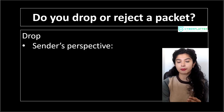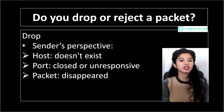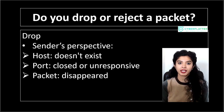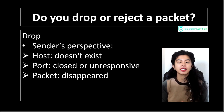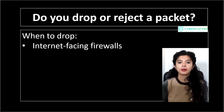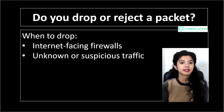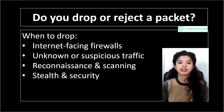From the sender's point of view, when a packet is dropped, it looks like the host might not exist, the port might be closed, or the packet just vanished somewhere on the internet. This behavior is important because it makes your system less discoverable. So if an attacker is scanning your network or probing your ports, they can't easily tell whether there's something responding on the other side. That lack of information increases your security by making reconnaissance harder. So when do we usually drop packets? On internet-facing firewalls where we don't want to reveal anything, when traffic is suspicious or unknown, when we want to protect against reconnaissance, scanning or probing — anytime stealth and security are the priority.